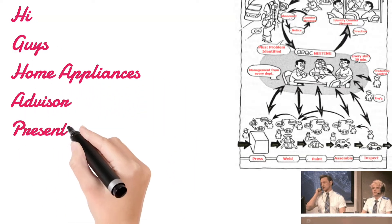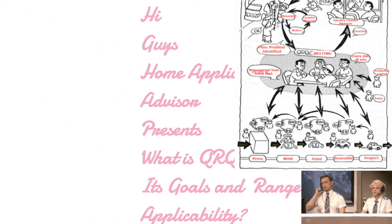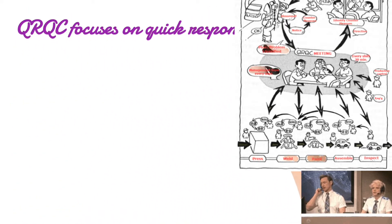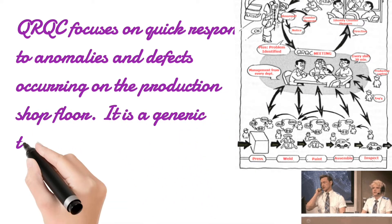Hi guys, Home Appliances Advisor presents: What is QRQC, its goals, and range of applicability. QRQC focuses on quick response to anomalies and defects occurring on the production shop floor. It is a generic term for a system that targets both quality and other problems.